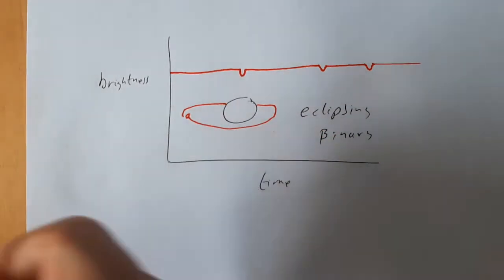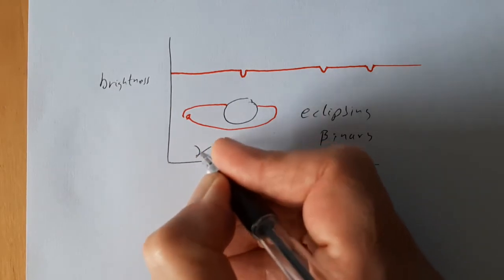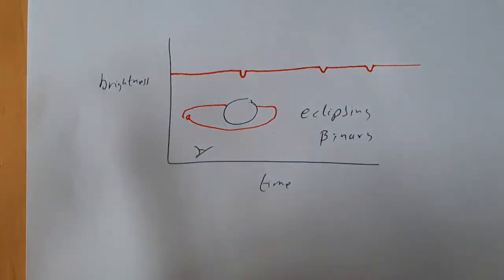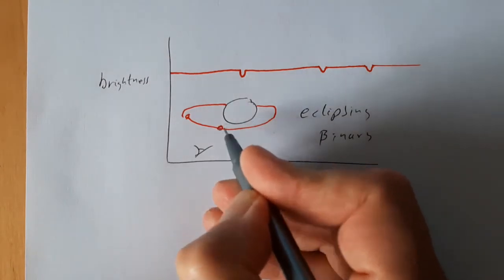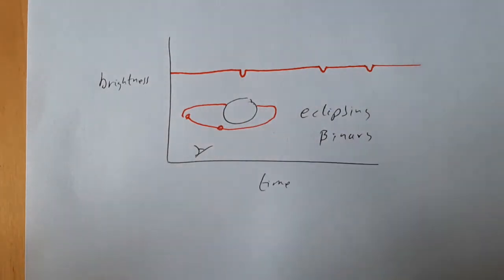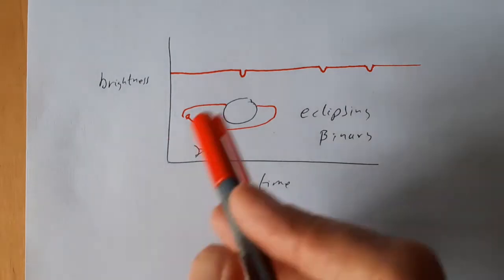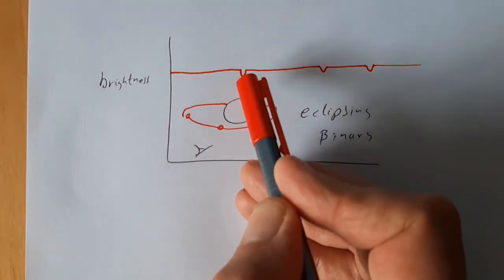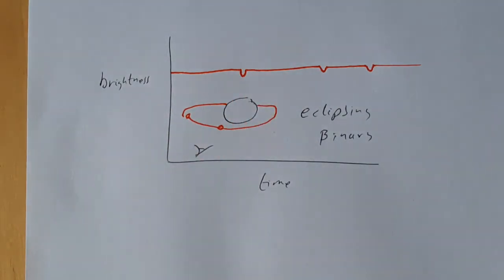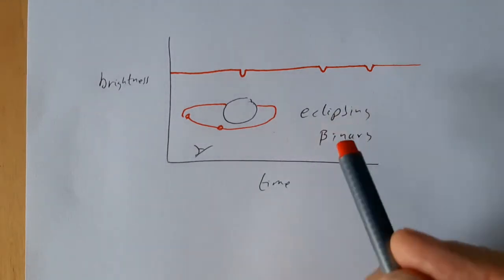And if our observer is in the same plane as the orbit or thereabouts, there's going to be a moment where the planet is in front of the star. It blocks some of the light and we get a very, very small reduction in brightness. So one of the ways we can detect an exoplanet is looking for eclipsing.